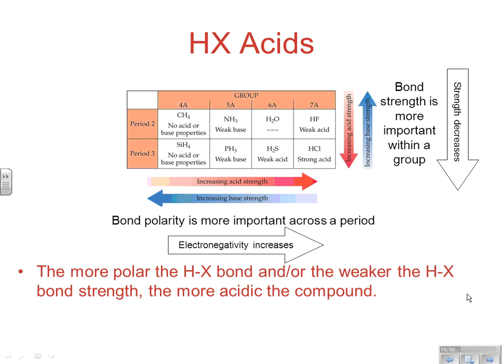Looking at a couple of general trends on the periodic table — two periods and four different groups. As you go across CH4 to NH3 to H2O to HF: CH4 has no acid-base properties, NH3 is a weak base, H2O is basically neutral, and HF is a weak acid. Looking at period 3: no acid-base properties, weak base, weak acid, strong acid. There's a general trend across a period of increasing acid strength, or going to the left, increasing base strength.